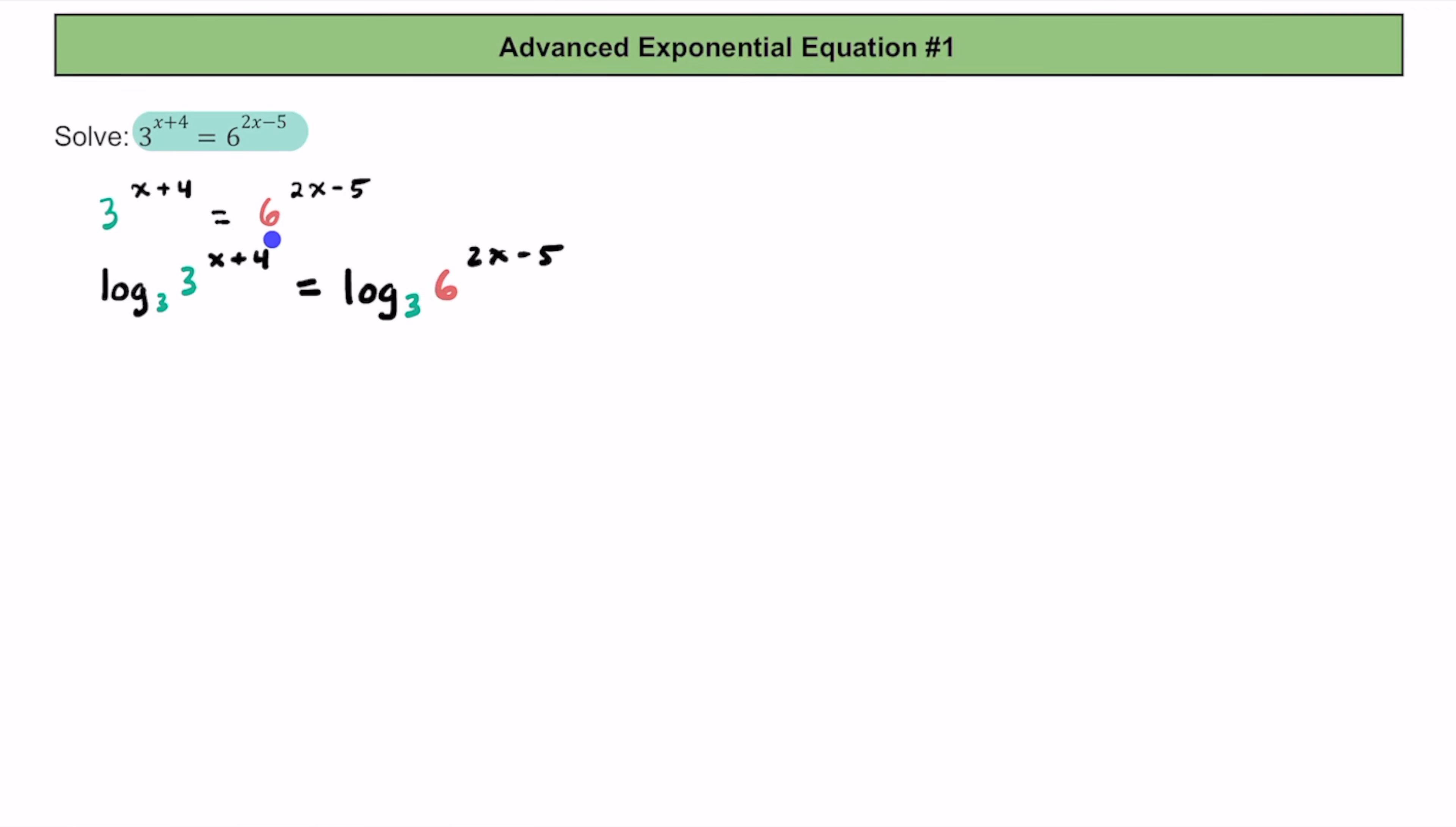Then using our power property, let's take this x plus 4 in the exponent and rewrite it in the front here. Keep in mind that we can do that if we have an exponent dealing with a logarithm. So we're going to have this quantity of x plus 4, and we're going to multiply that by log base 3 of 3.